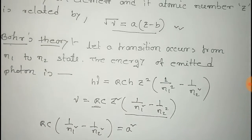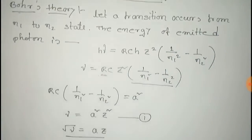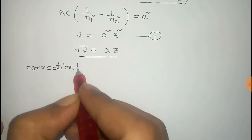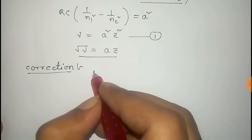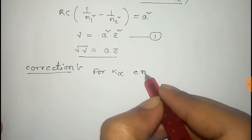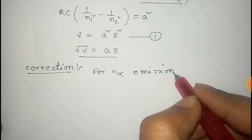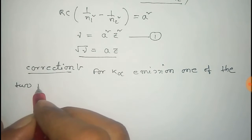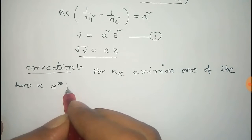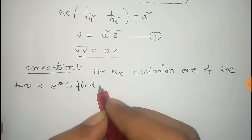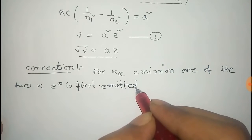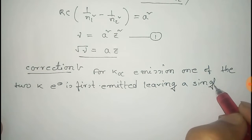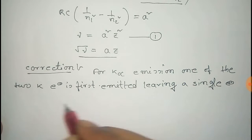You can see there is a missing term b, because in the main Moseley's equation there is a term b. We need a correction. For K-alpha emission, one of the two electrons in the K shell is first emitted, leaving a single remaining electron in the K shell.